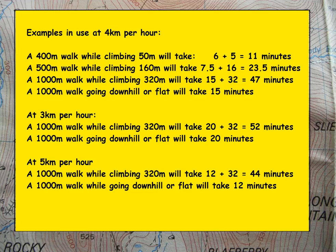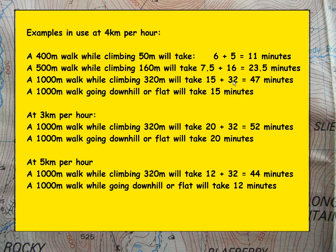Here are some examples of the rule in use. The top section is taken at 4 kilometres per hour. For example, a 400 metre walk while climbing 50 metres will take 4 times 1.5 minutes, which is 6 minutes, plus 5 minutes for the height, giving 11 minutes. For 1 kilometre climbing 320 metres, it takes 15 minutes plus 32 minutes, giving a height time of 47 minutes, whereas the same distance going downhill or flat will take 15 minutes. Some useful examples at 3 and 5 kilometres per hour are also shown. In the final analysis we only count whole minutes.